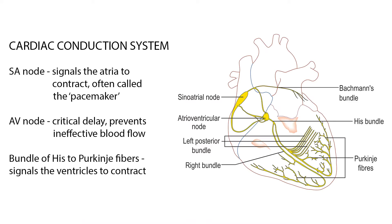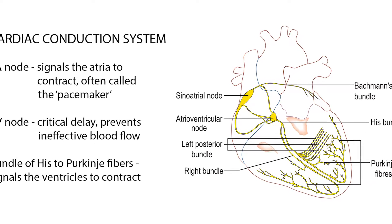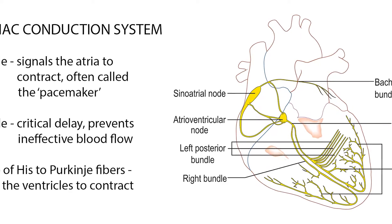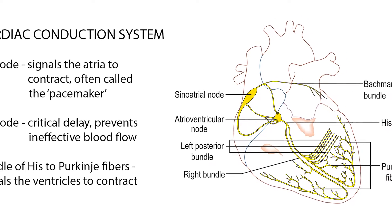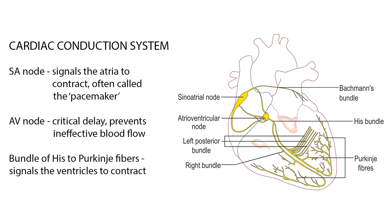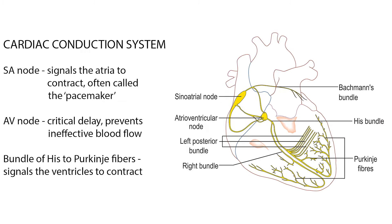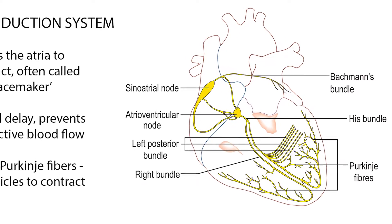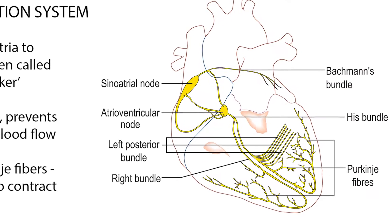The heart's ability to beat all starts in the sinoatrial or SA node, which is a small mass of specialized tissue located in the atria. Depolarization or activation of the cardiac muscle is initiated by an impulse from the SA node, which spreads through the right atrium and through Bachmann's bundle to activate the left atrium.